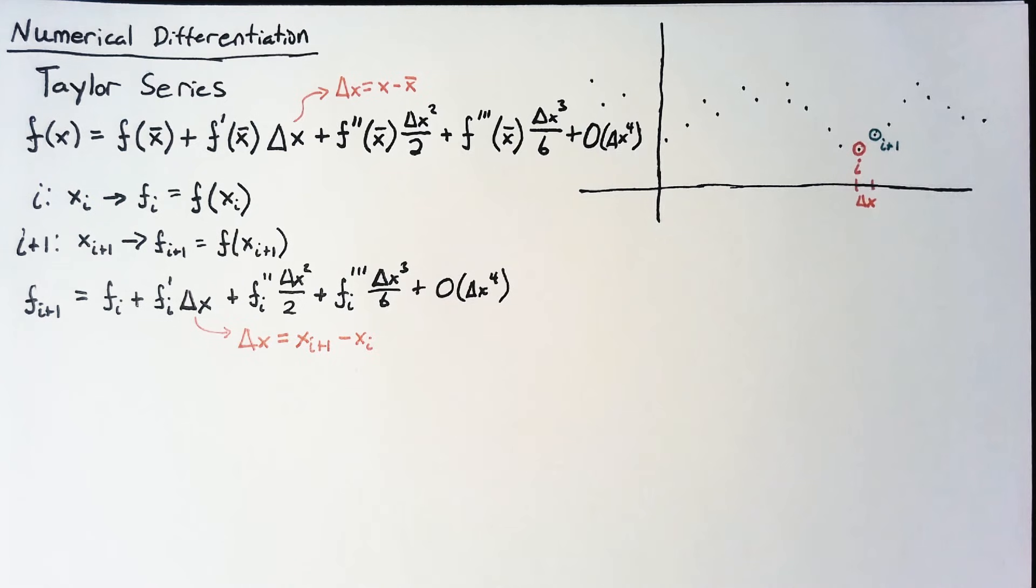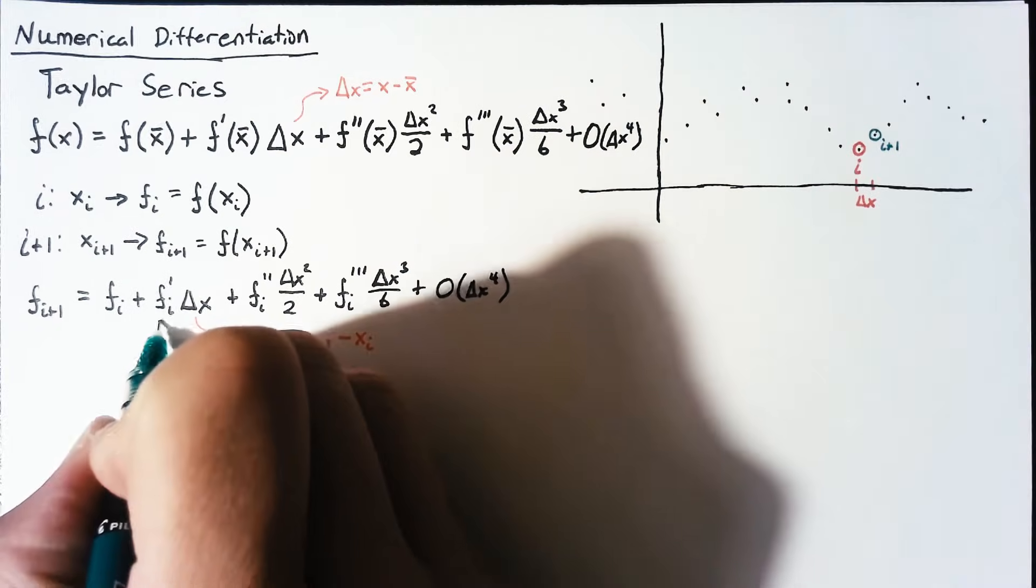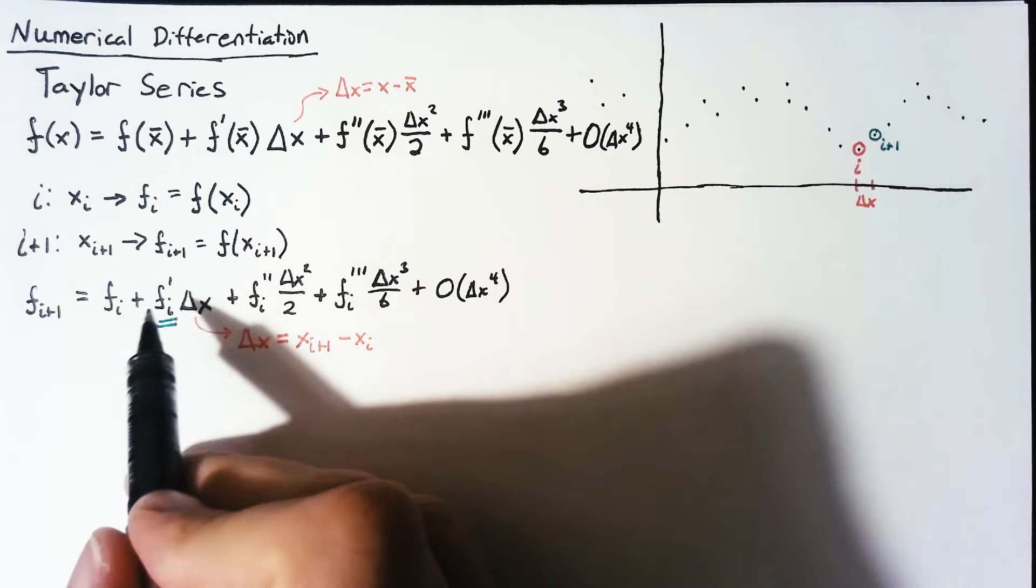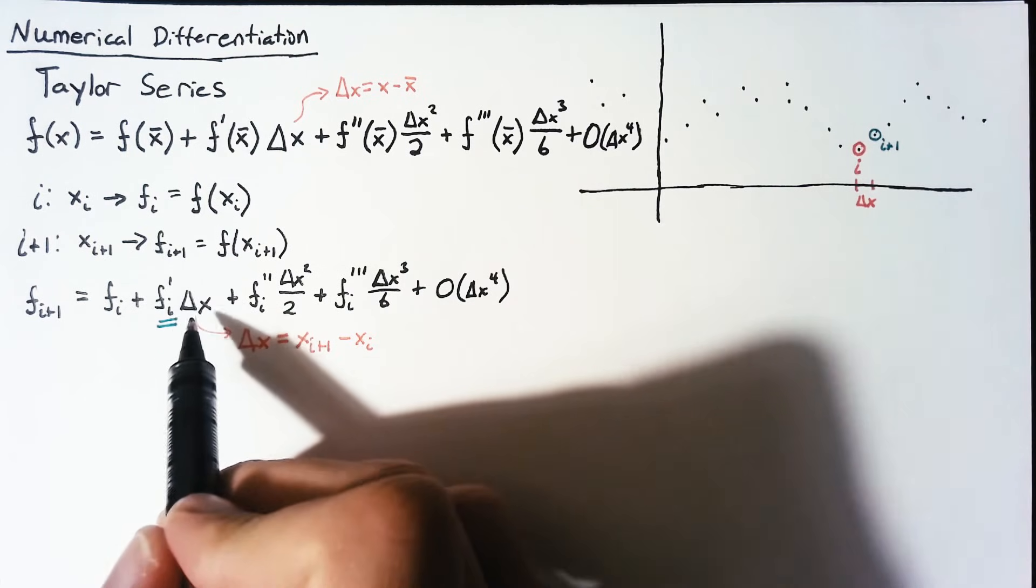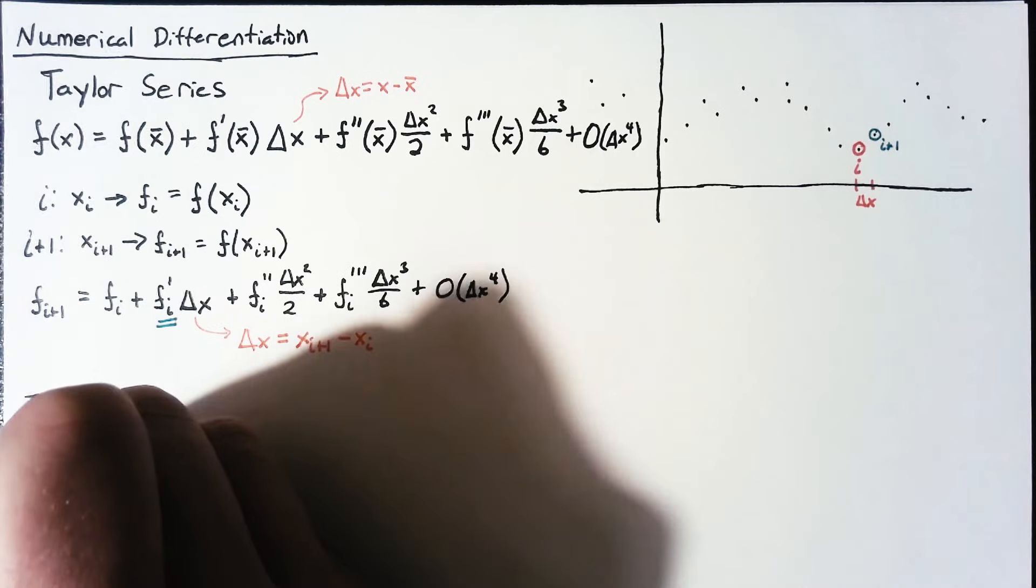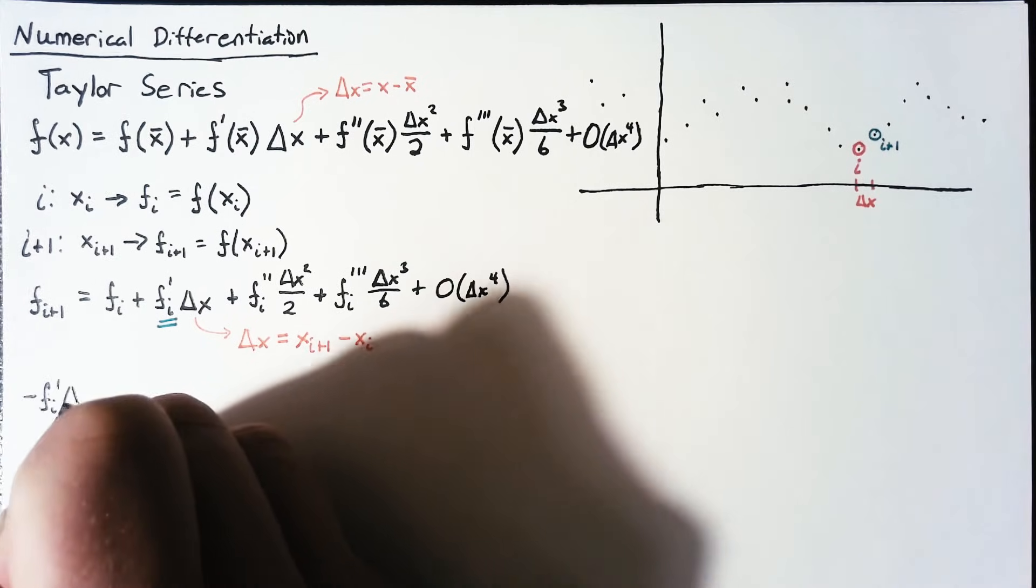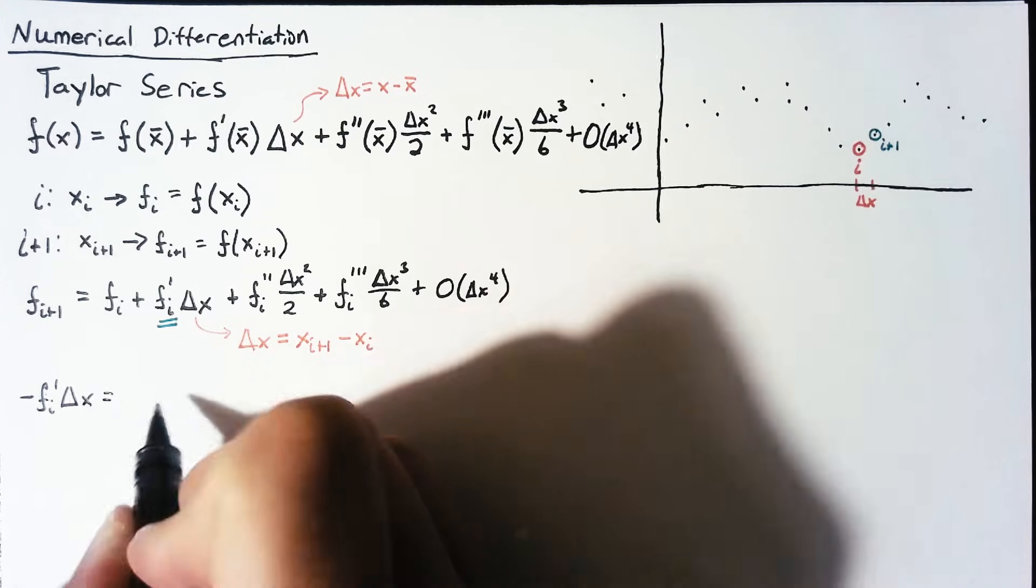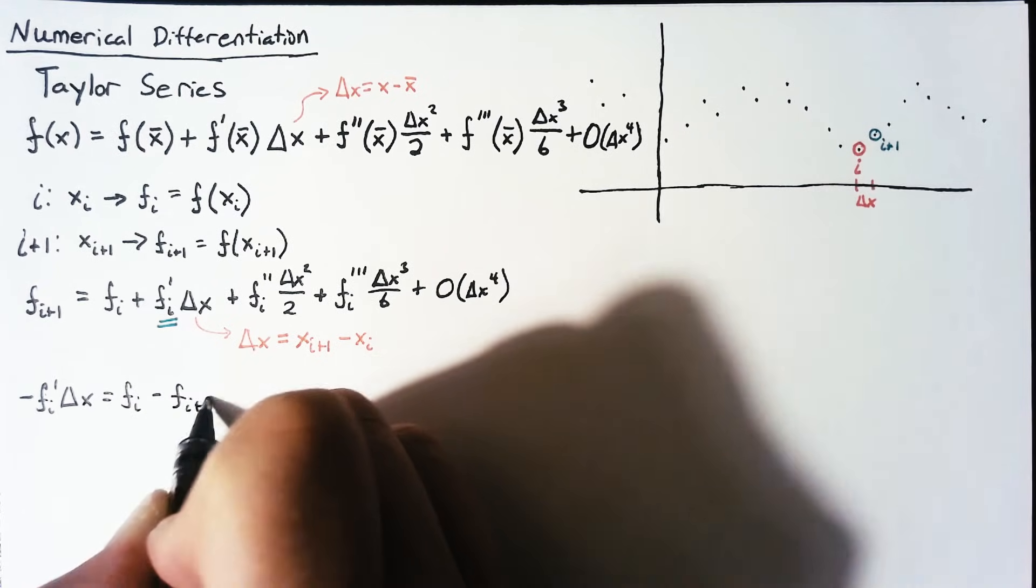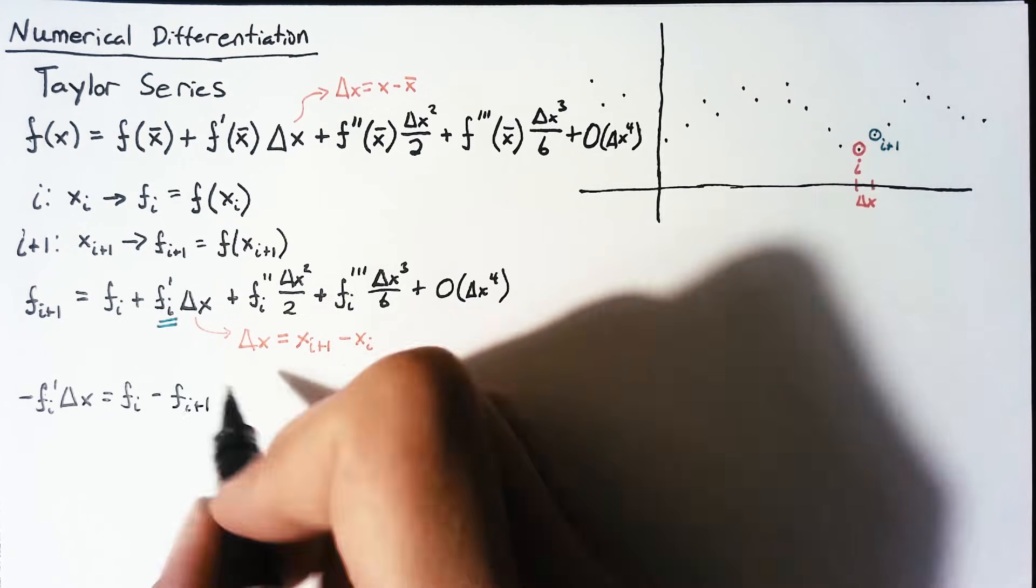Now remember that what we're looking for here is the derivative. So we want to solve this equation for fi prime. So what I want to do is go ahead and isolate this term on the left-hand side of the equation. So I will end up with a negative fi prime multiplied by this delta x, which is going to be equal to f of i minus fi plus 1. And then we have all this other stuff.